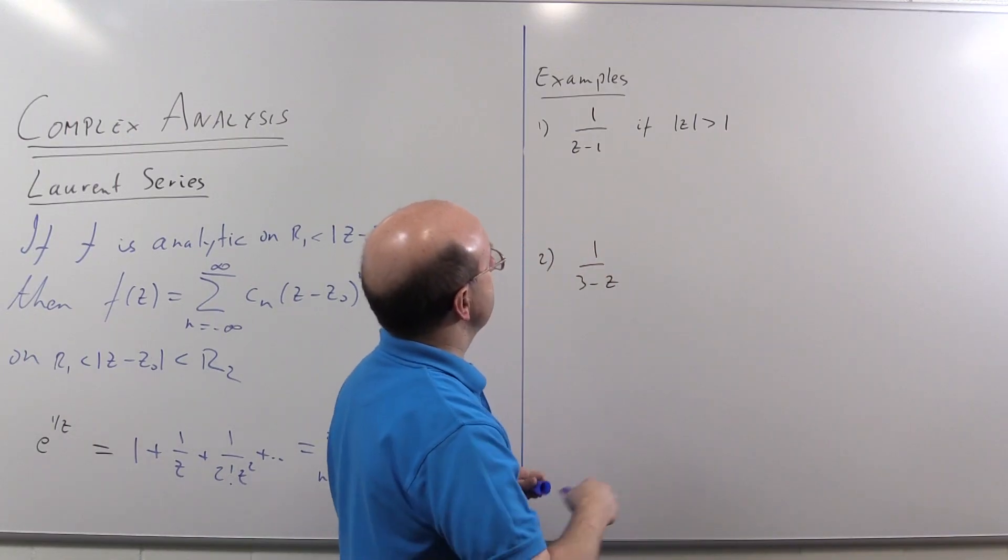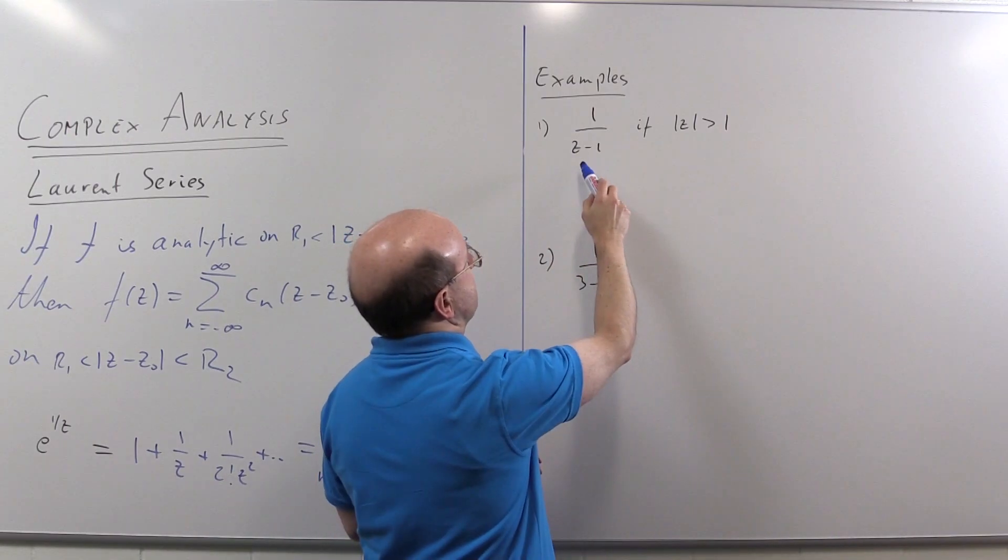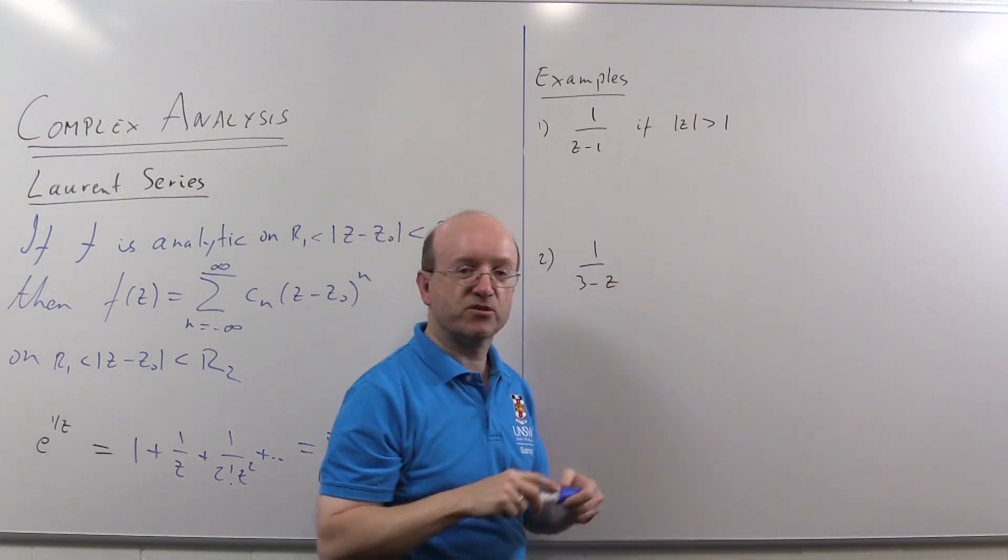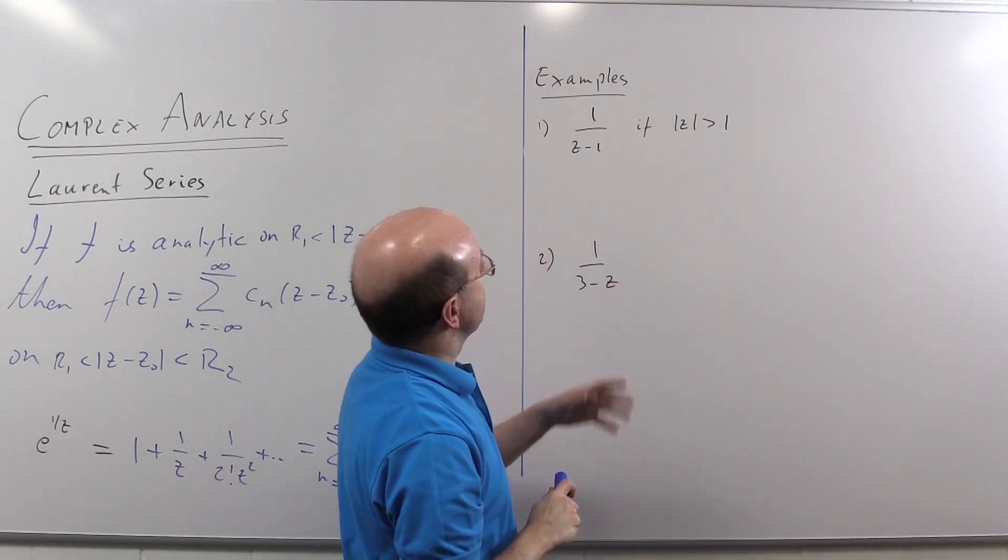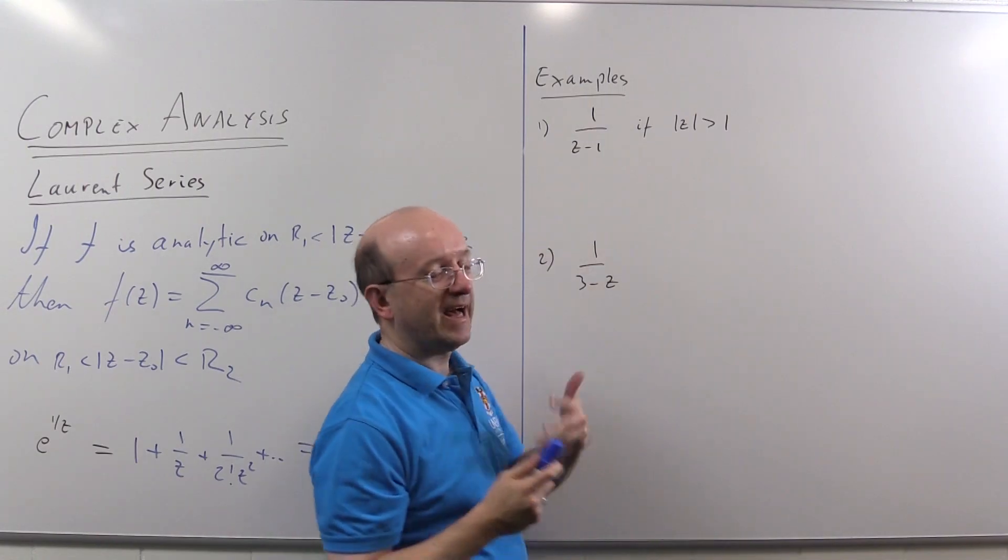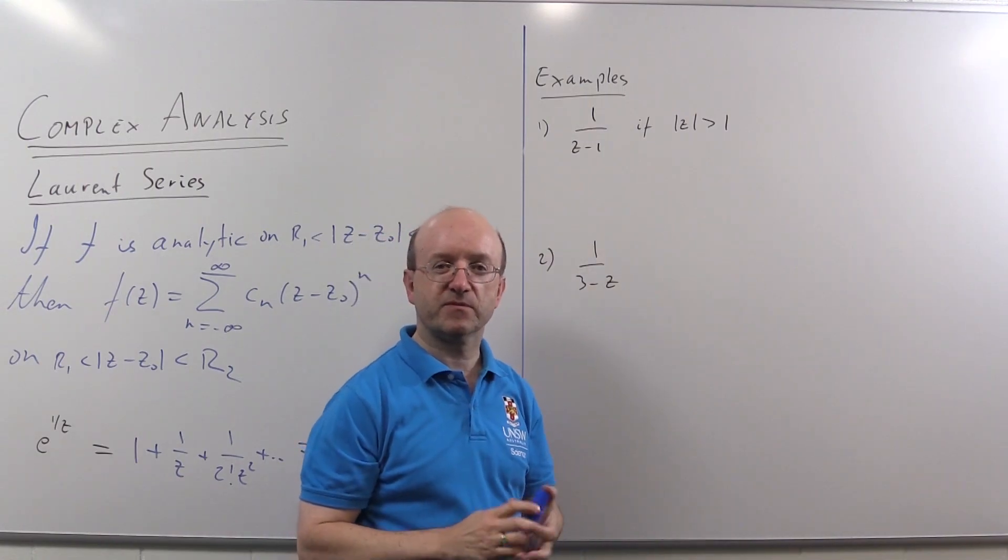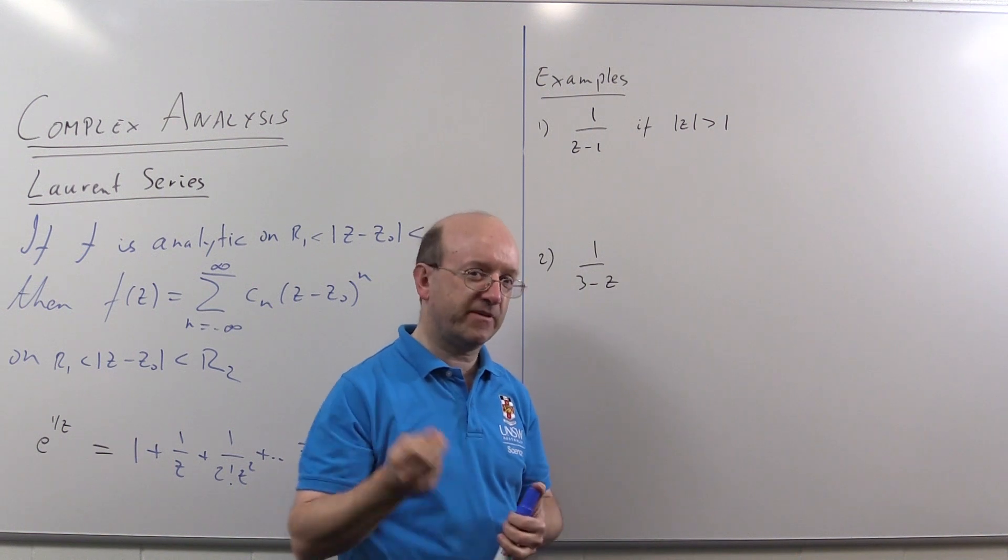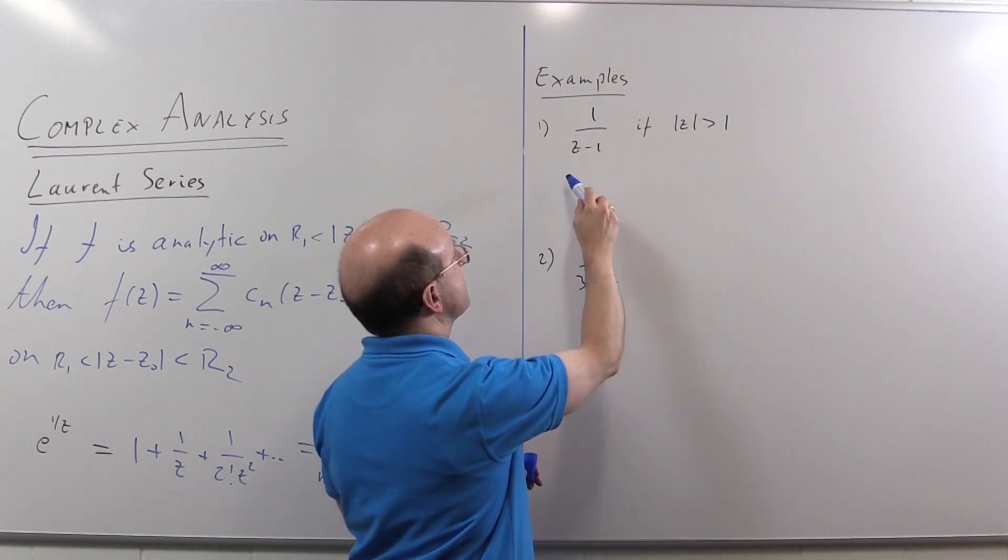So what do I get here? I want the power series for 1/(z-1) in the region where |z| is bigger than one. I can't just write down the geometric series here, I have to do a little algebra, but it's really just a variant of the same algebraic trick we saw in the Taylor series case.